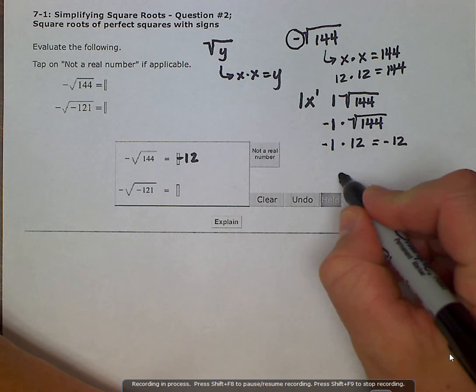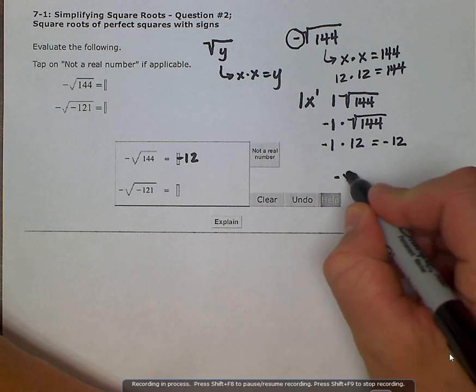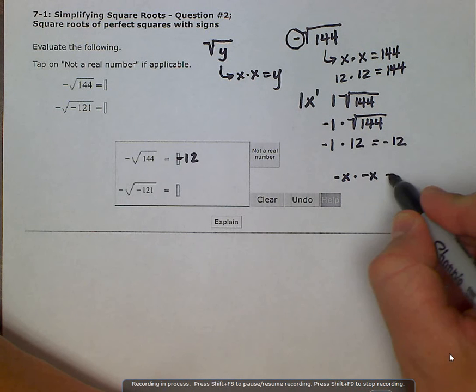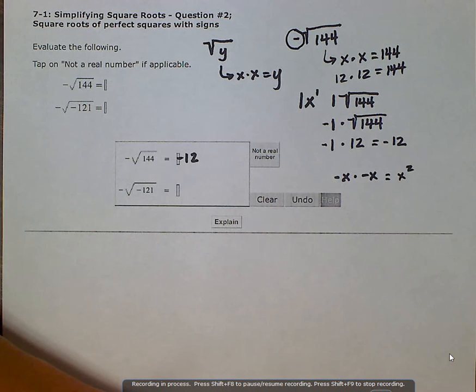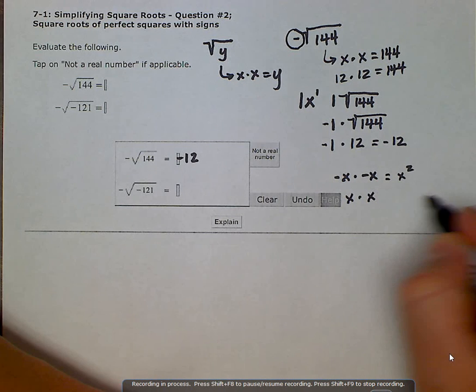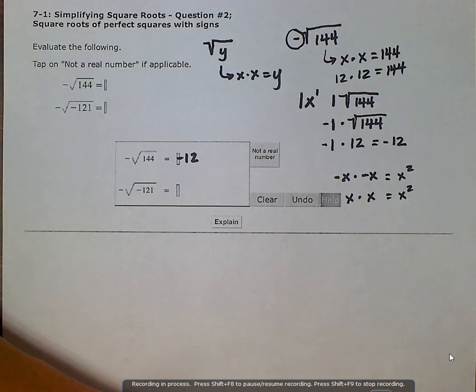If I have two negatives, negative x times negative x, two negatives when multiplied together equals a positive. Same as if I have a positive times a positive, it's also a positive number. So there's no number when multiplied by itself that can give you a negative number.